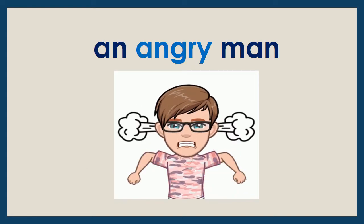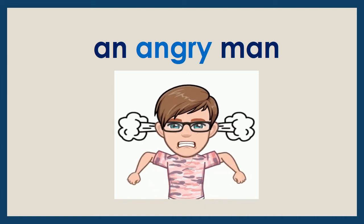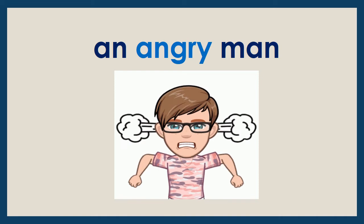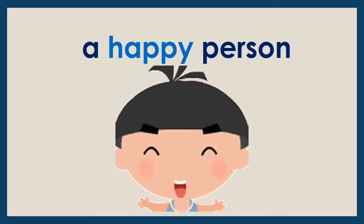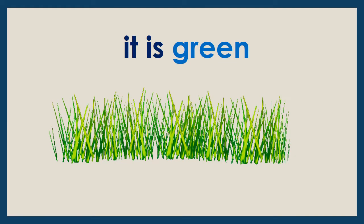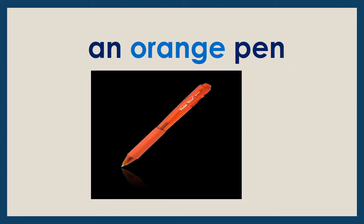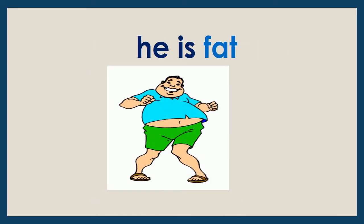Look at the picture and tell me where is the adjective. An angry man — angry is the adjective because it describes the feeling of this man. A happy person — happy is the adjective. It is green — green tells us the colour of the grass. A wide road — the adjective here is the word wide. An orange pen — it tells us about the colour orange. He is fat — fat is the adjective, it tells us about look.